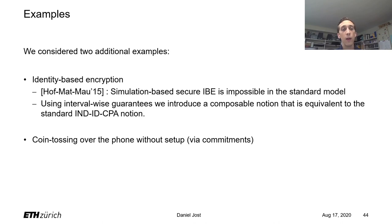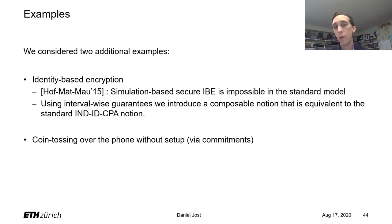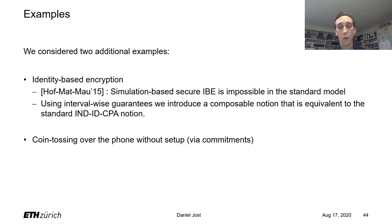As a second example we looked at coin tossing via commitments. Obviously one could use a UC commitment, but then setup would be required. What we were able to do was come up with a formalization of commitments that doesn't have to rely on setup, and then the coin tossing protocol can be applied using the composition rules without having to prove any explicit reduction.